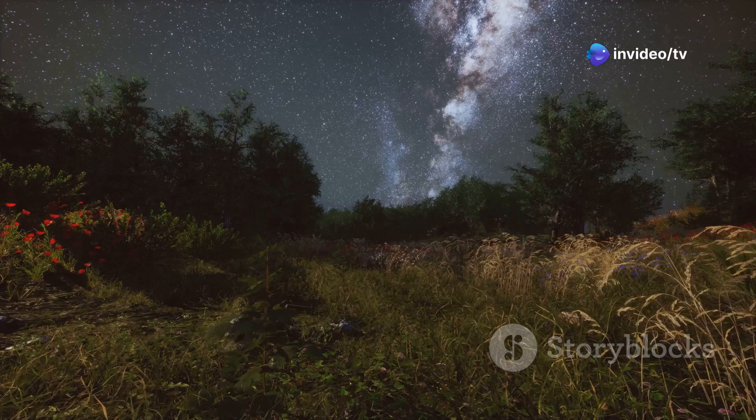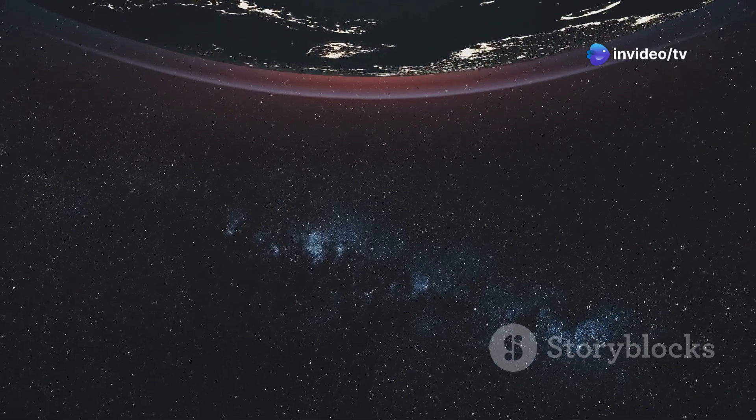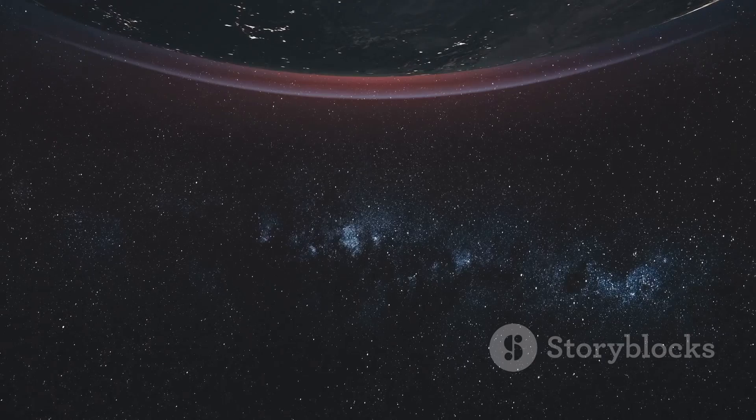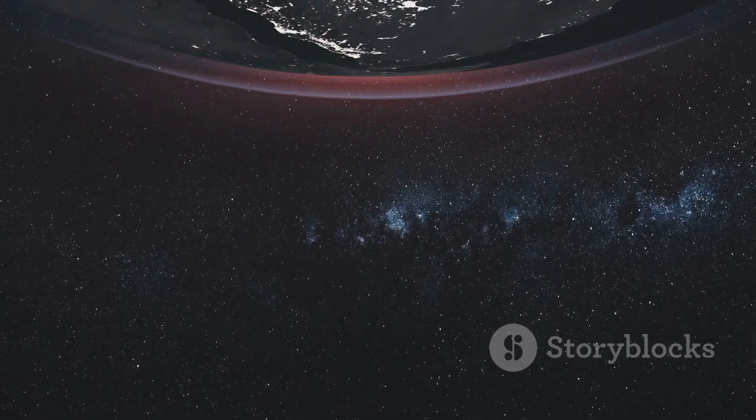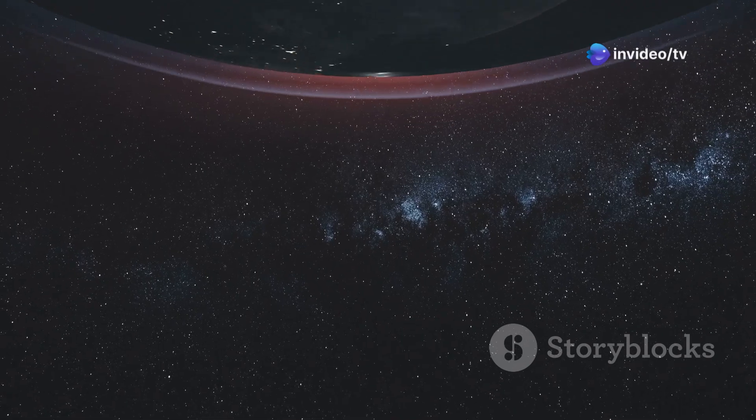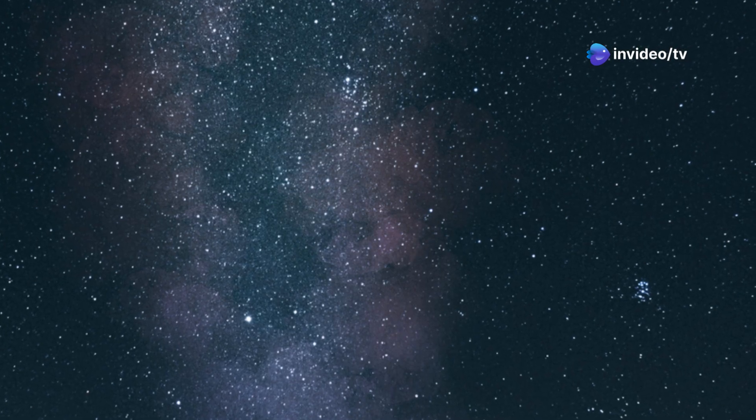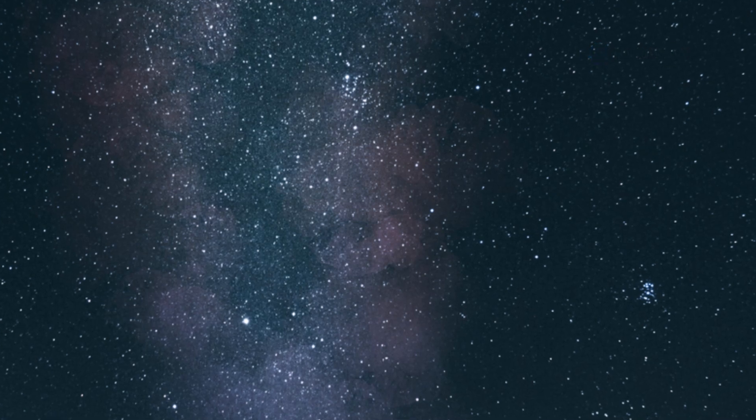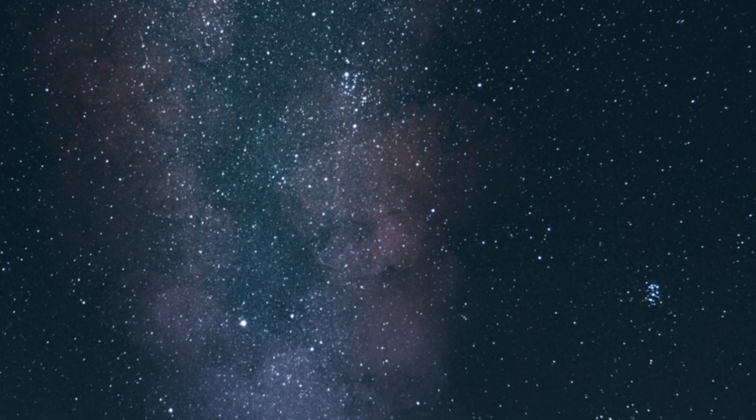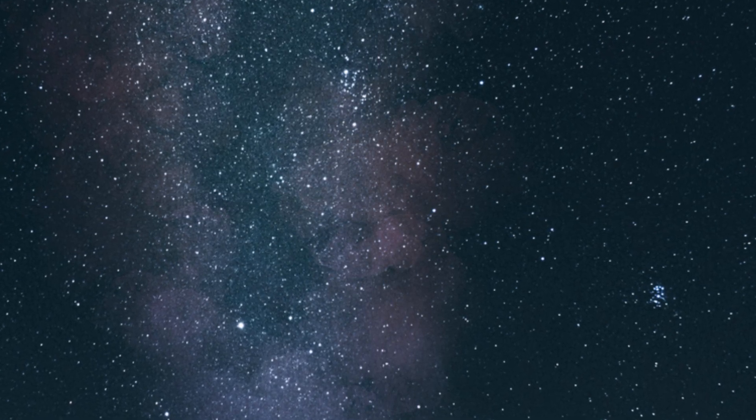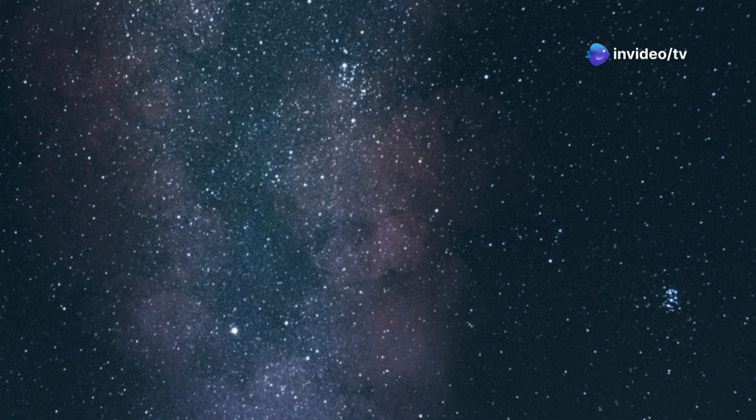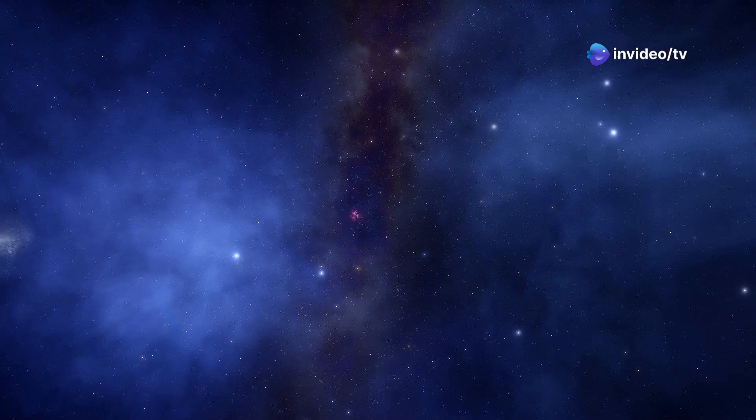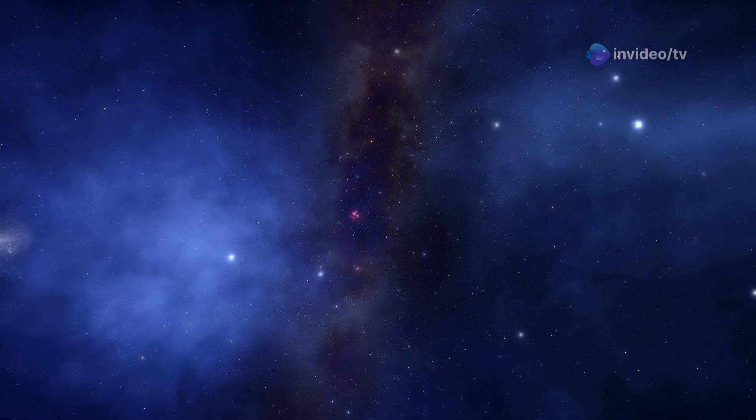We are located about two-thirds of the way out from the galactic center in the Orion Arm. This position places us in a relatively safe and stable part of the galaxy, far from the chaotic and dangerous regions near the galactic core. That's about 26,000 light years from the heart of the Milky Way. This distance provides us with a unique vantage point to observe the structure and dynamics of our galaxy.